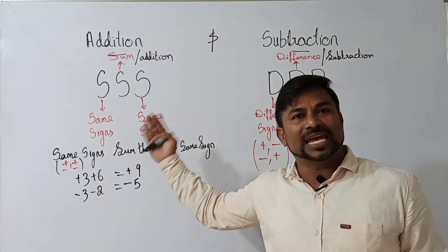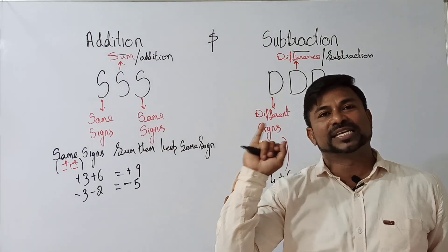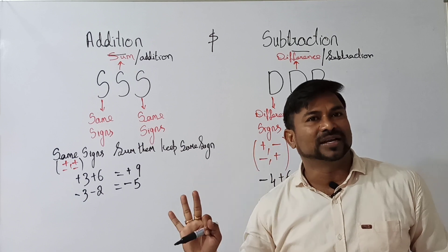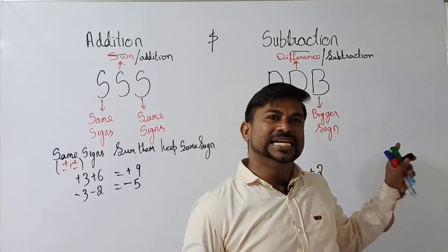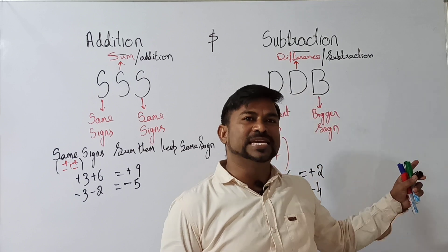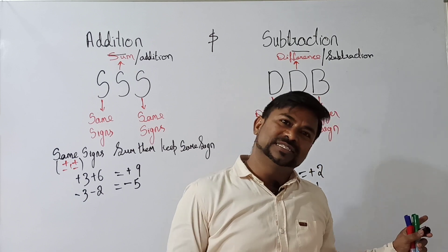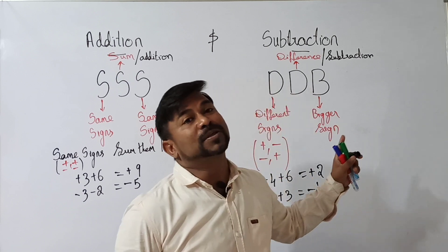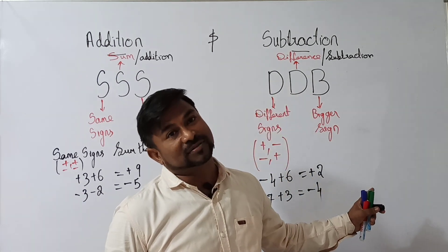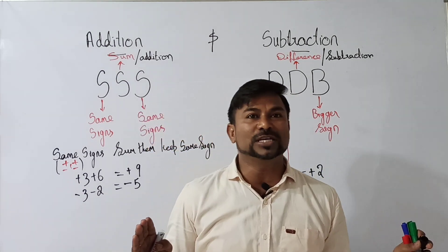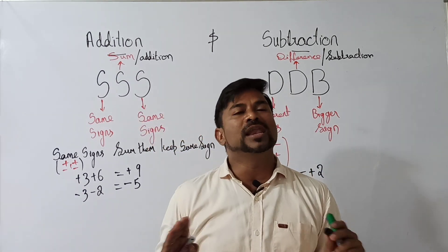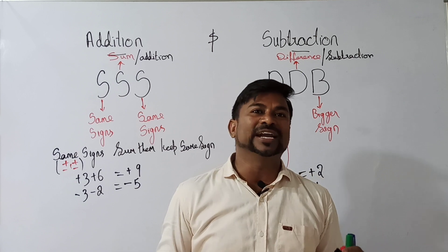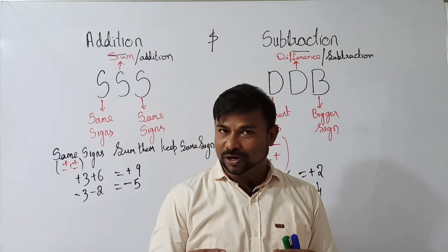So simple logic: S, S, S — same signs, sum them, keep the same sign. D, D, B — different signs, find the difference, and keep the bigger number sign. If you remember these two, we are never going to forget addition and subtraction.